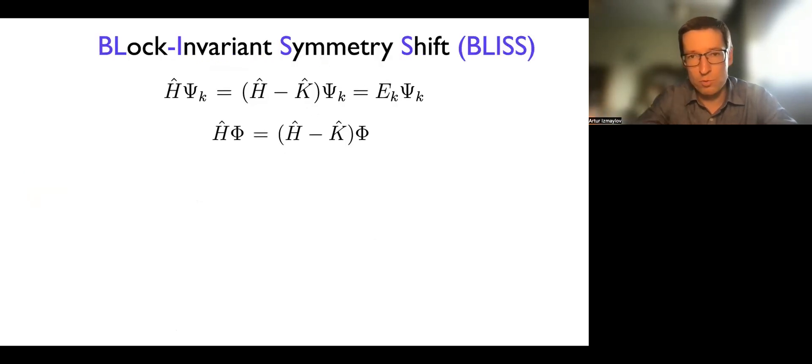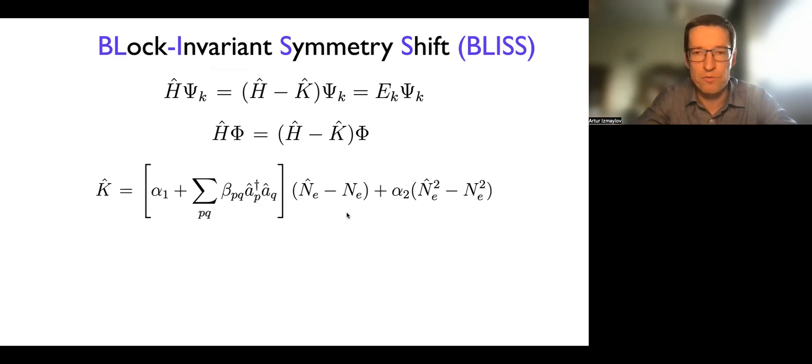Now, this is exactly what we're doing in our approach, which we call BLISS. We're just subtracting from the Hamiltonian some part that does not change the action of the Hamiltonian on the eigenstates of interest and on the initial state that we also create in some sort of symmetric state with the right number of electrons. Now, the key part in order to achieve this is creating this expression, which is really quite simple. If you think about it, this number of electron operator, and this is the constant, the number of electrons that we're interested in, in the state that we are trying to prepare and then get as a result of quantum phase estimation.